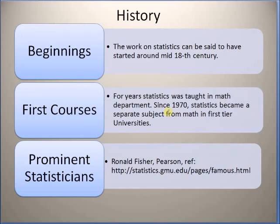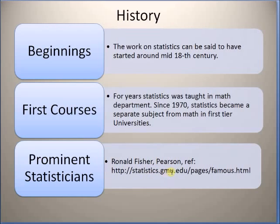In the beginning, the early 20th century and middle of the 20th century, statistics was originally taught as a part of the mathematics department. Later, from the 1970s onwards, statistics became a separate discipline from mathematics and is taught in various first-rate universities. Some of the most prominent statisticians are Ronald Fisher and Pearson. If you are interested in the history of statisticians or popular statisticians, please go to the website maintained by George Mason University.